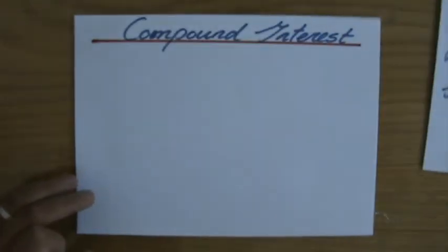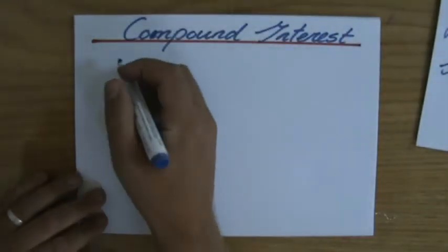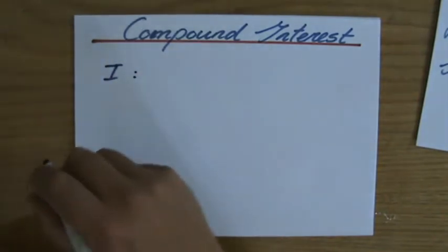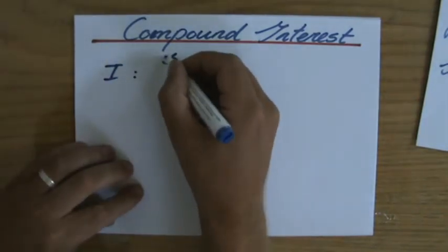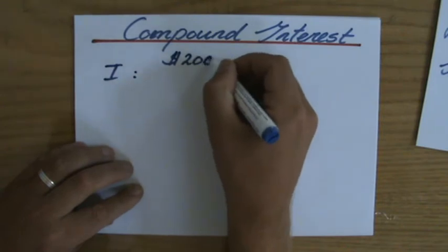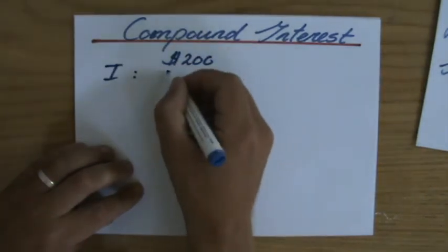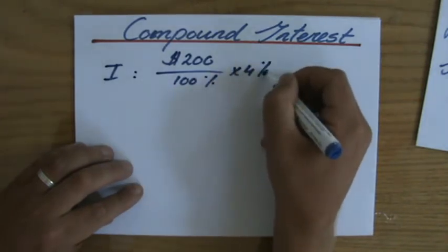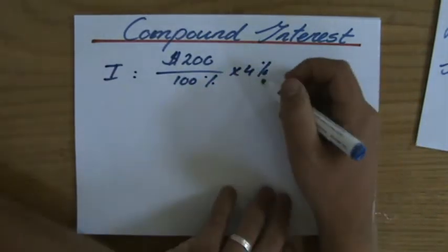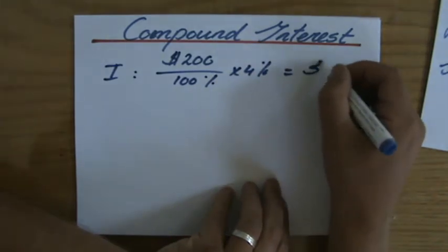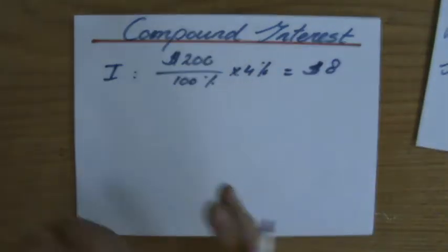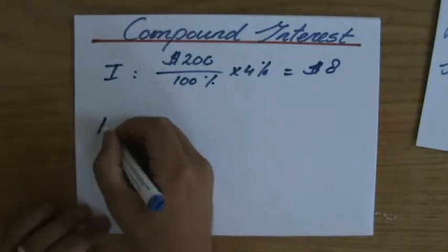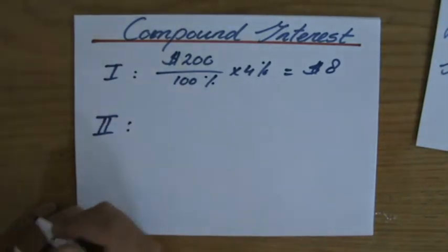They're giving me 4%. I find out what is 4% of $200, so I divide by 100 and times it by 4, and that is $8. So after year one, they're going to give me $8 compound interest. It's not the same as simple interest. At the beginning of year two, I don't have $200 in my bank account—I have $208.